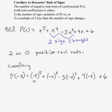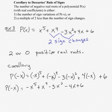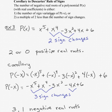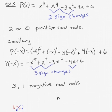The corollary says replace x with negative x in the original polynomial and simplify: negative x to the fifth, positive x to the fourth, negative 3x squared, negative 4x plus 6. Counting sign variations: subtraction to addition, addition to subtraction, subtraction to addition — that's 3 sign changes. So the corollary tells me there are 3 or 1 negative real roots. Subtracting 2 from 3 gives 1. I'm guaranteed at least 1 negative real root.